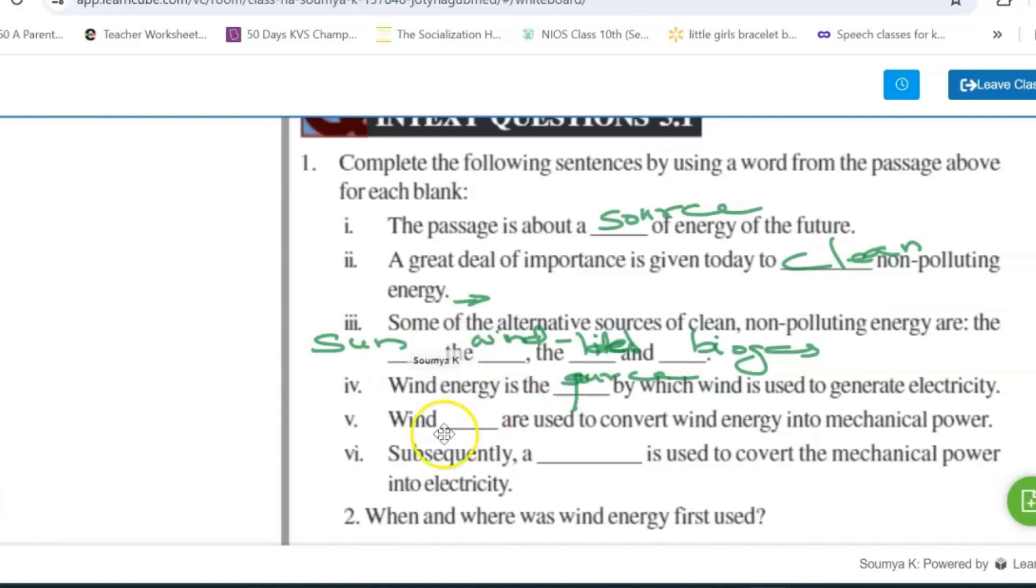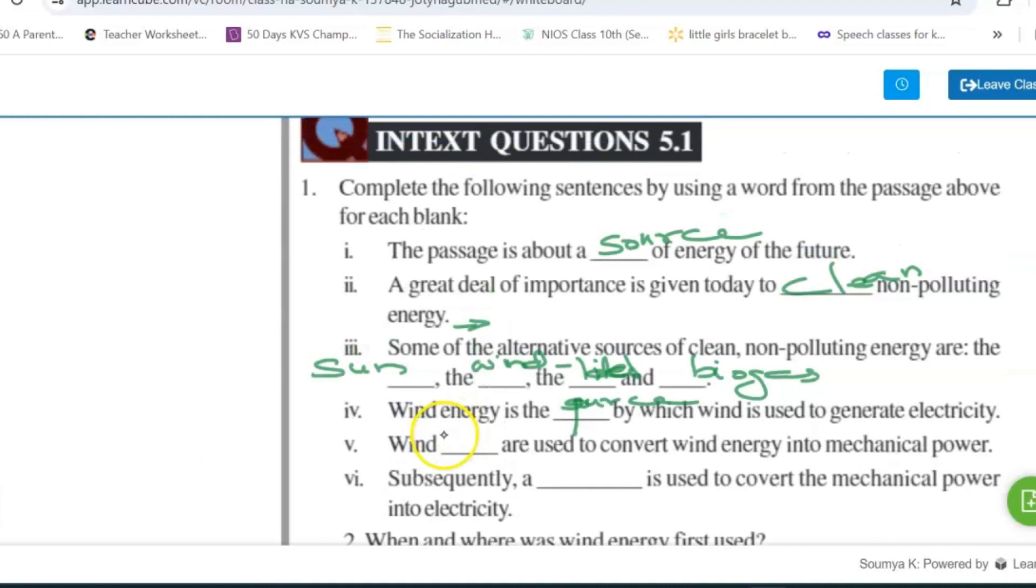Wind blank are used to convert wind energy into mechanical power. Wind power is used to convert wind energy into mechanical power.